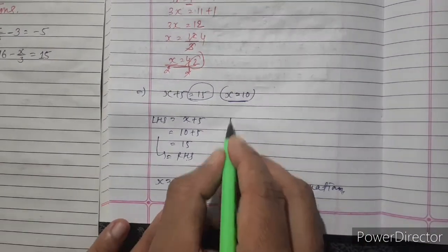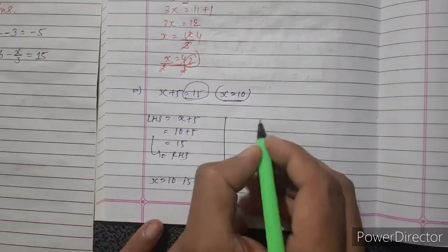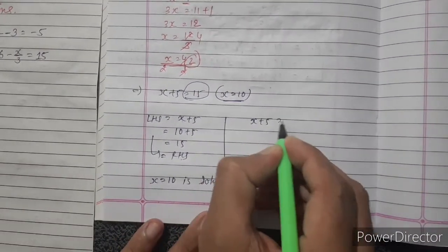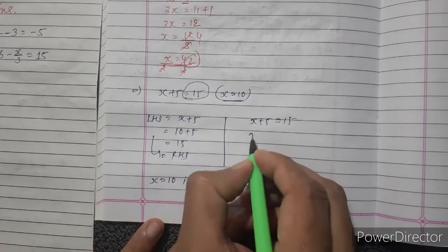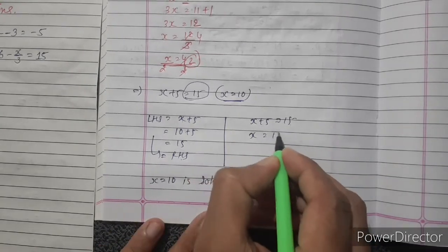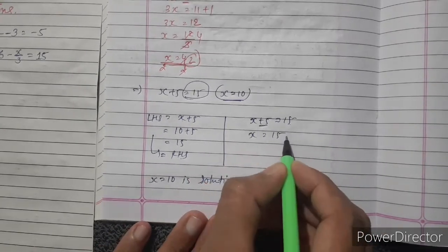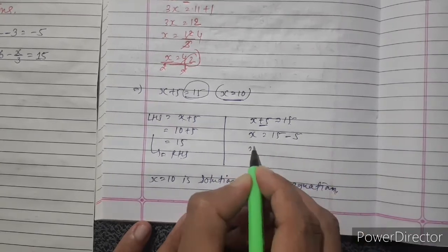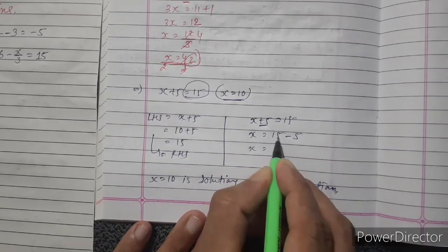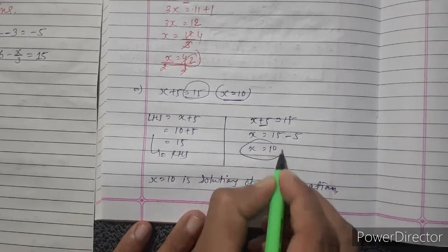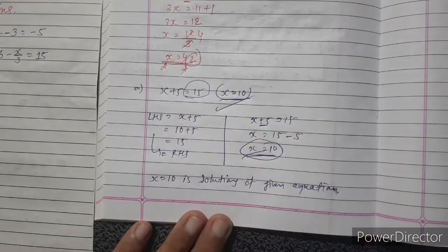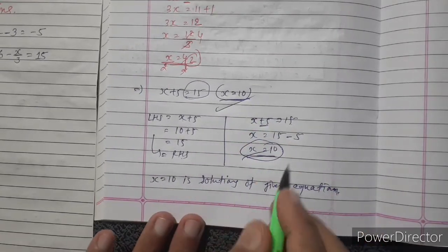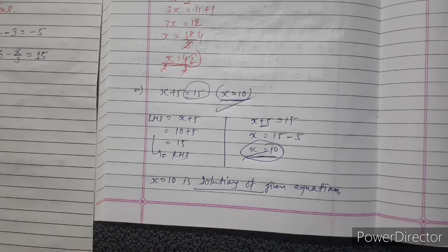Another method: just solve the equation. x plus 5 equals 15, so x equals 15 minus 5, meaning x equals 10. This is the same as the given value, so x equals 10 is a solution of that equation. Use any one method.